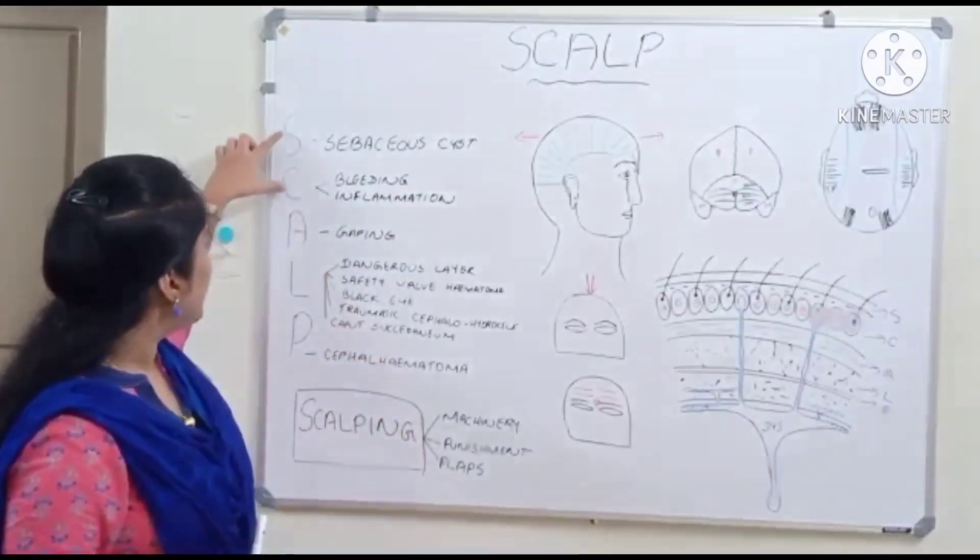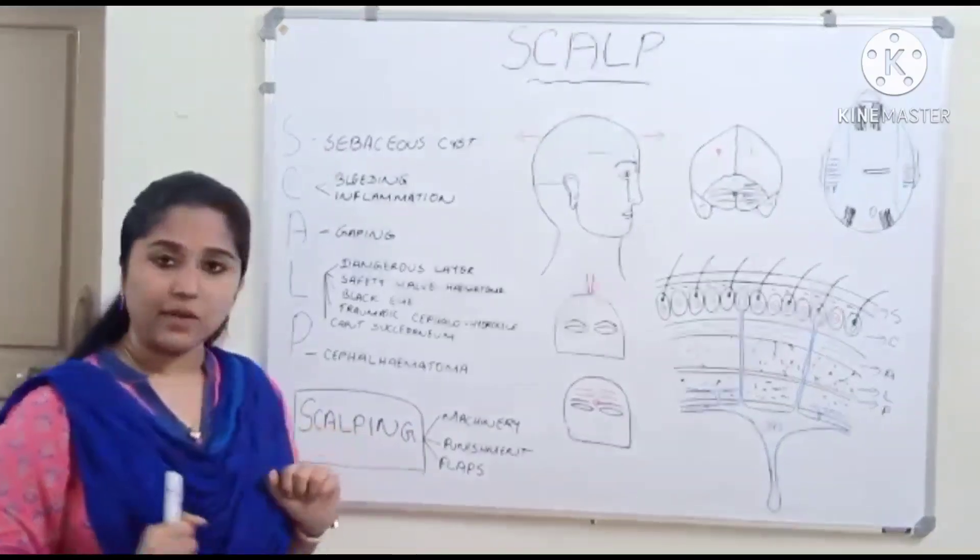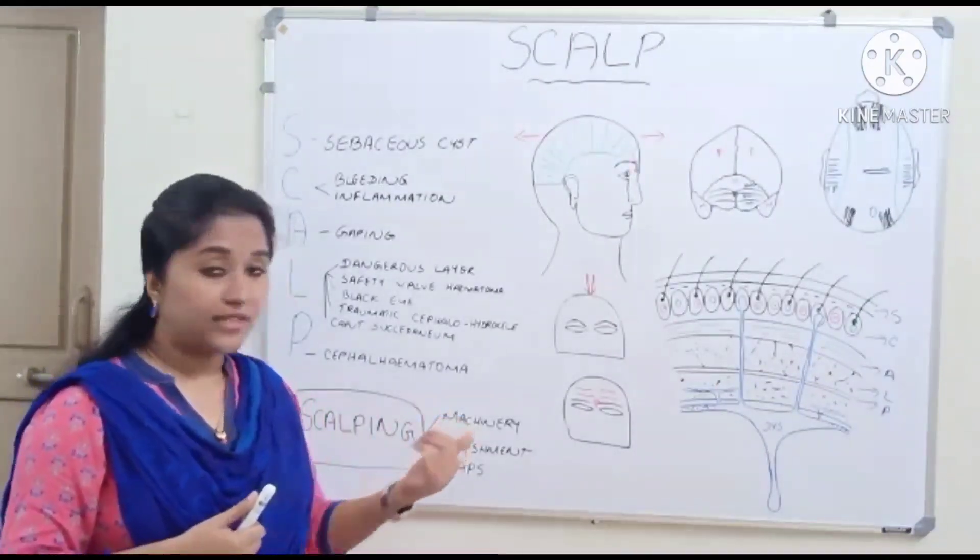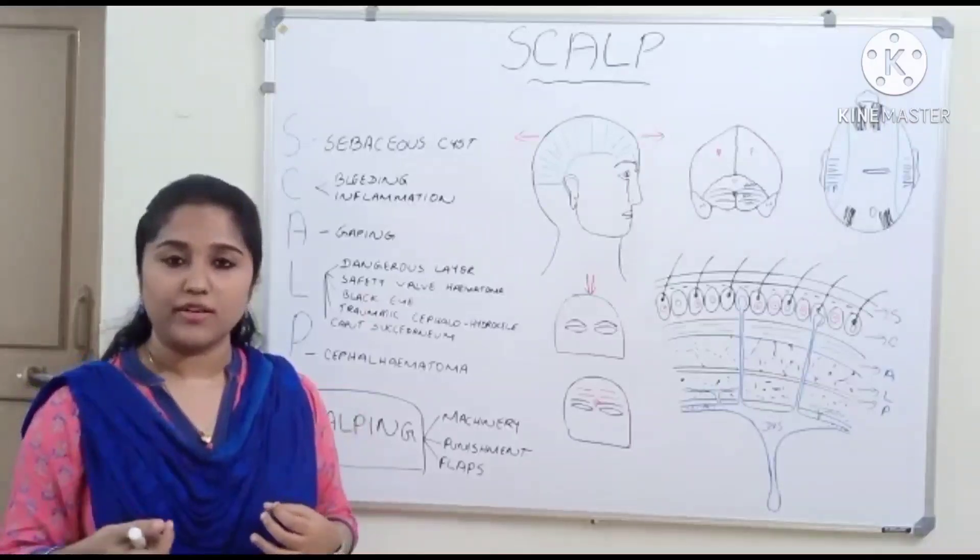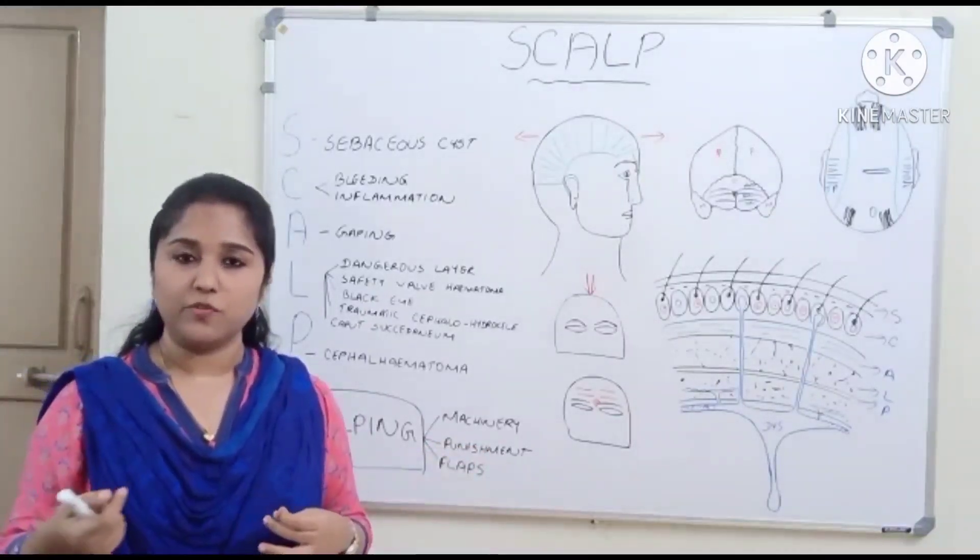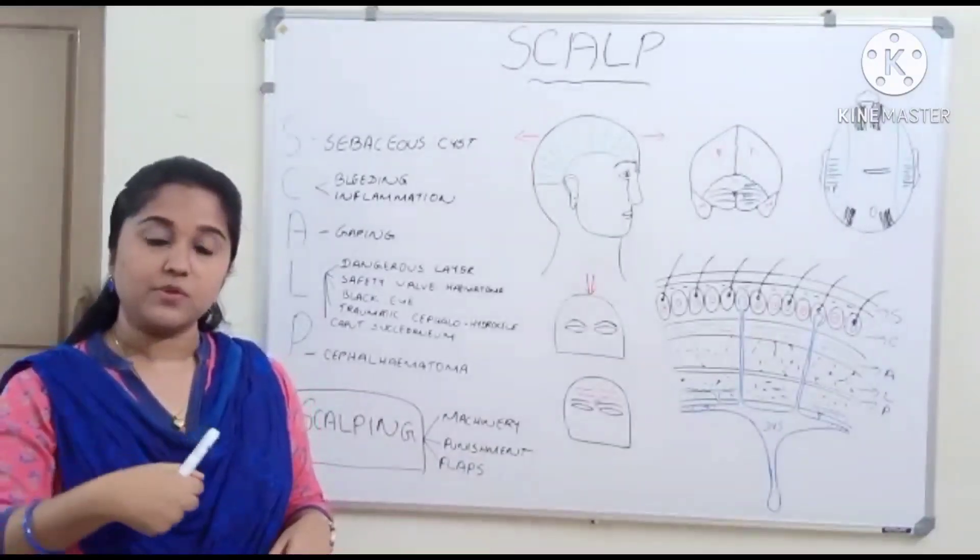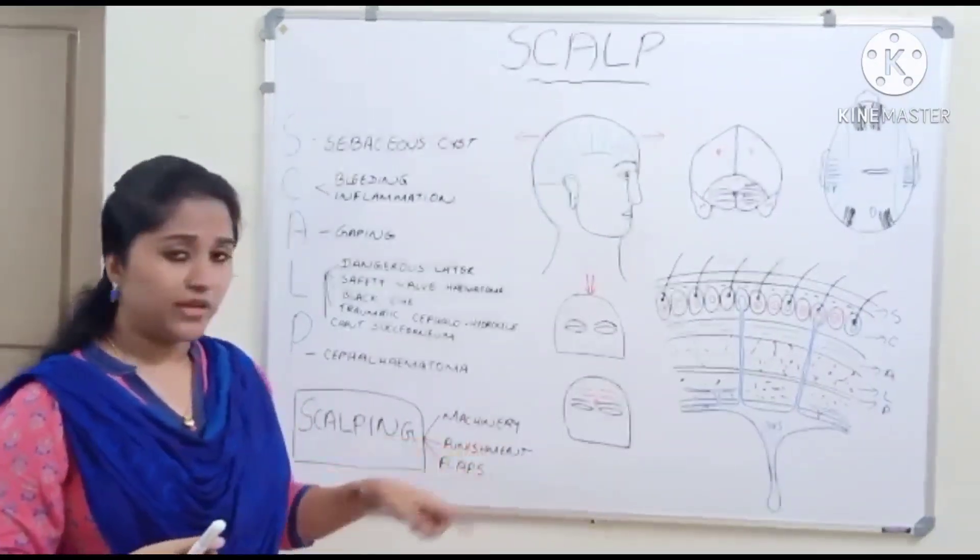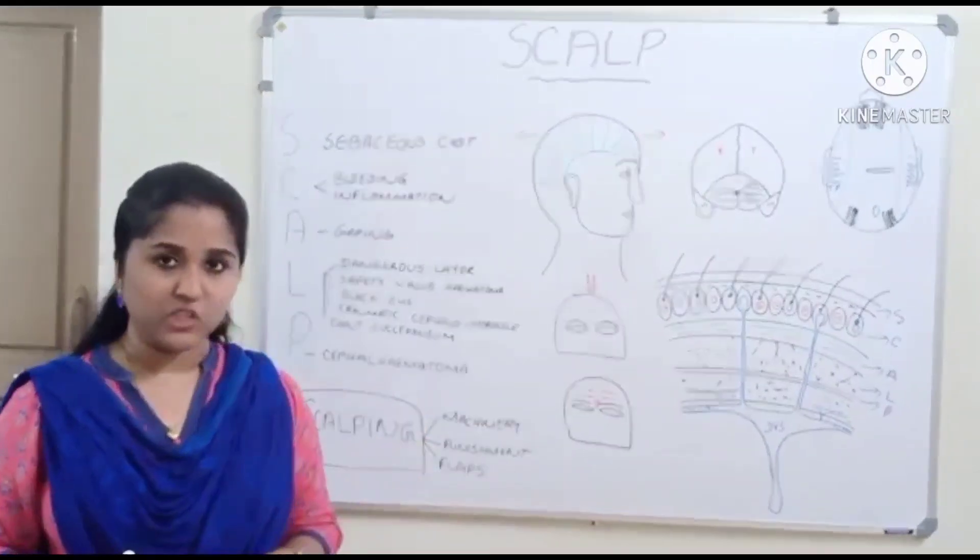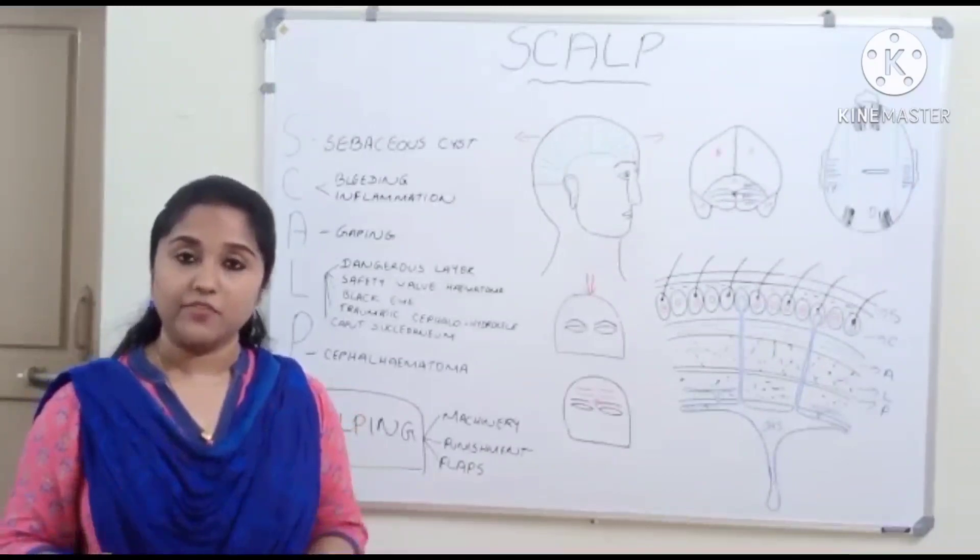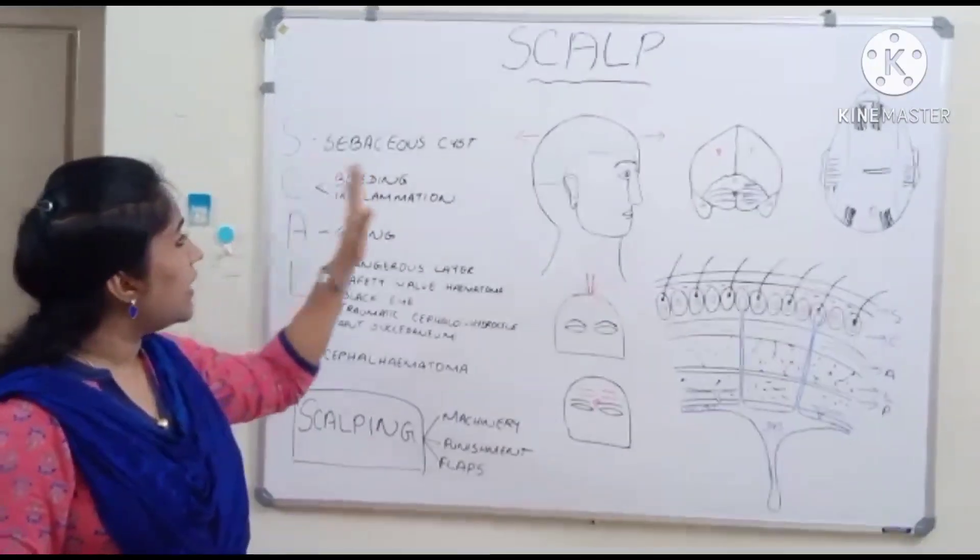What is known as scalping? The first three layers move as a unit. Scalping injury is more common when the hair is caught in a machine, like during a picnic or something. This can lead to avulsion of the first three layers because these three layers are attached intimately. In previous ages, it was used as punishment. This is also used for flaps by surgeons.